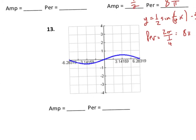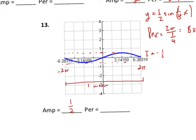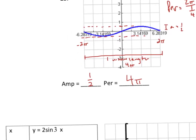For number 13, finding amplitude and period from a graph is a bit trickier. The amplitude is not too hard — you count how high it goes. The graph oscillates between −1/2 and 1/2, so the amplitude is about 1/2. For the period, you identify one full wavelength. This graph shows one full wave going from −2π to 2π, making the wavelength — and therefore the period — 4π. Algebraically, the period is 2π over b; graphically, it's the wavelength.